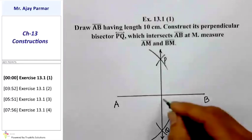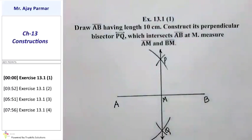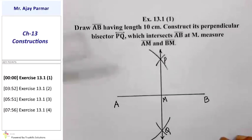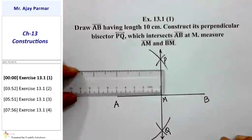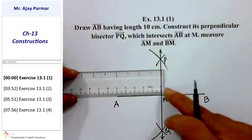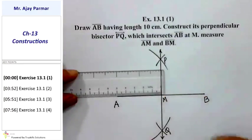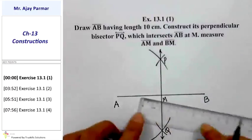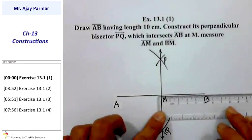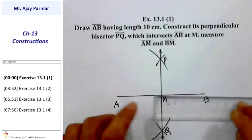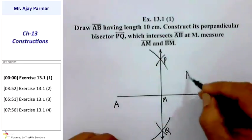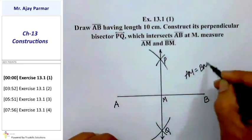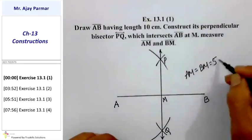According to the question, it intersects line segment AB at point M. Since line segment AB is 10 cm, line segment AM and line segment BM should each measure 5 cm. If I put the scale so that 0 coincides with M, then 5 will coincide with A. Similarly, if M coincides with 0, then 5 coincides with B. So line segment AM equals line segment BM equals 5 cm.